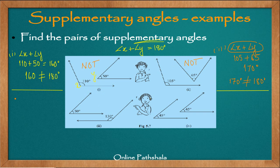For the third problem, we have angle X plus angle Y equals 50 degrees plus 130 degrees. When I add this, it equals 180 degrees. Therefore, the pair of angles in example three are supplementary angles.